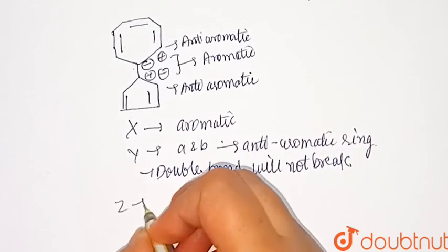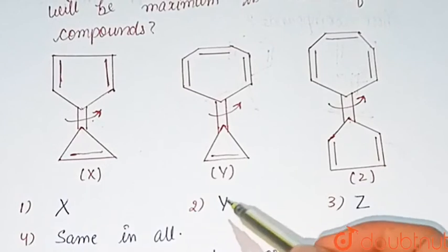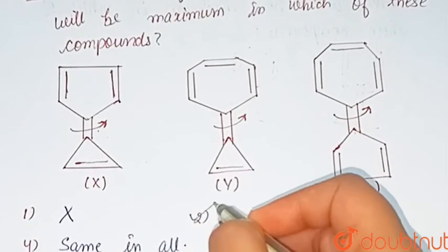And in Z it having both rings aromatic here. Barrier for rotation about indicating bond will be maximum in Y compound. Option 2 is the correct answer of this question.